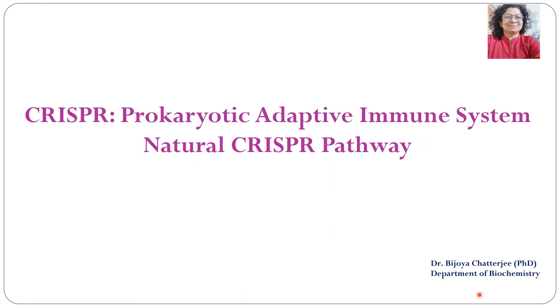In 2001, Moica and Ruud Jansen proposed the acronym CRISPR for this genome sequence found in bacteria. CRISPR is a prokaryotic adaptive immune system. In order to understand this, let us see its natural CRISPR pathway.